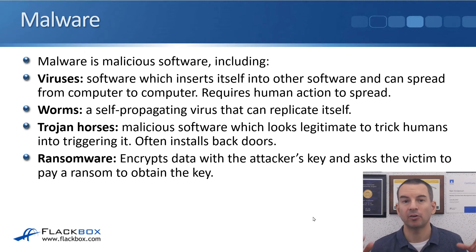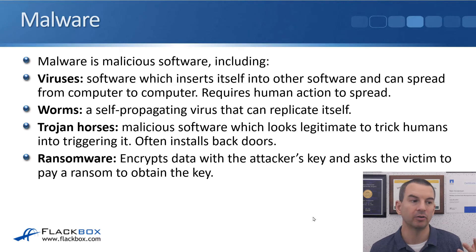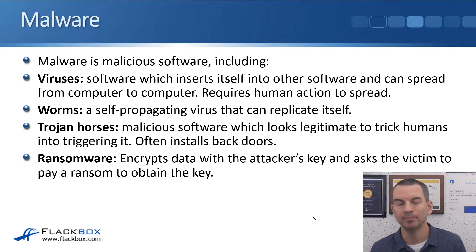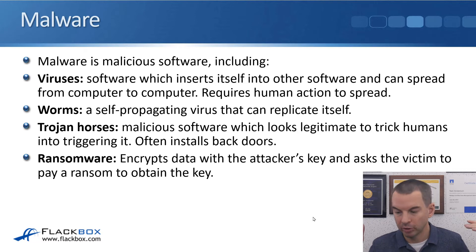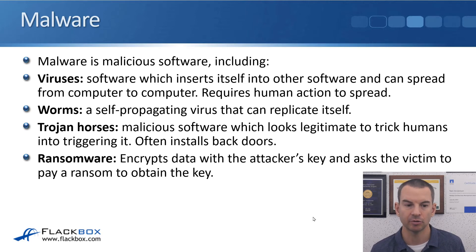Worms are self-propagating viruses that can replicate by themselves, so they don't require human action to spread. For example, maybe you are running a database on one of your PCs and when it gets infected, it's able to connect out and look for other systems running the database and infect them as well. Once infected, if you've got other software susceptible to that worm, it can spread itself to those other systems as long as it has network connectivity.